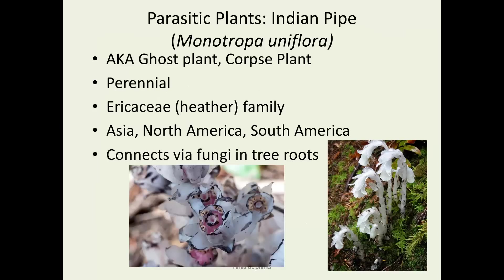Here's a really interesting, unusual-looking one called Indian pipe. This is an obligate parasite. You can see how white it is — there's no chlorophyll at all. You can see the flowers on the lower left. This is an angiosperm in the heather family, widely distributed around the world. It's unusual in that it uses a fungus as the transport for its nutrients. Many trees have symbiotic fungi in their roots called mycorrhizae that help the tree, but Indian pipe has figured out how to use those fungi to send nutrients to itself instead.